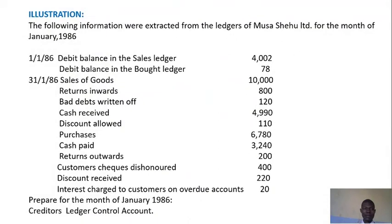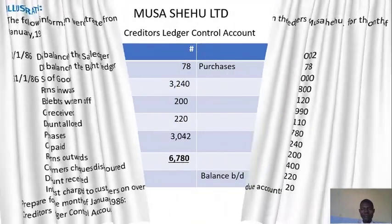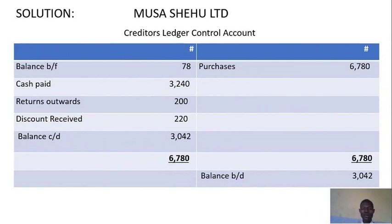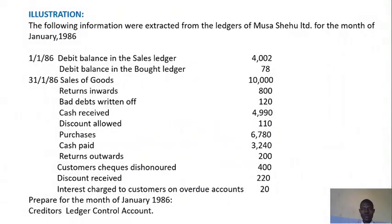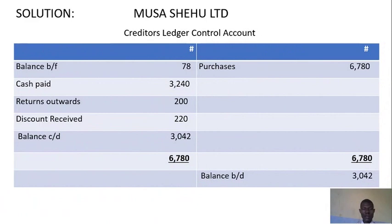We also have purchases, which represent credit purchases: 6,780 Naira. We have cash paid to creditors: 3,240 Naira. Then we also have returns outwards: 200 Naira. Discount received: 220 Naira. Those are the items we have. At the credit side we have 6,780 Naira. At the debit side we have 78 Naira for balance brought forward, cash paid to creditors 3,240 Naira, returns outwards 200 Naira, and discount received 220 Naira. So you add 78 + 3,240 + 200 + 220.